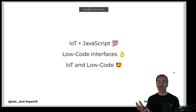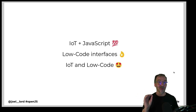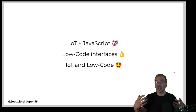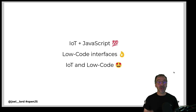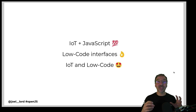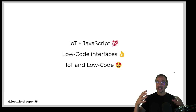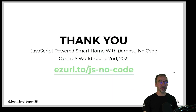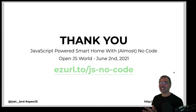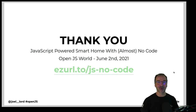You can see how I can connect all those different services — send emails, connect to Twitter — and there are a lot of different things you can do with Node-RED. IoT and JavaScript work really well together. It's nice because I don't have to learn a new language — I can use my current knowledge to immediately start programming IoT devices. Low-code interfaces are really fun and make it easier for different people to contribute. IoT and low-code go well together — especially since Node-RED is event-based and works so well with the whole IoT ecosystem. Thank you very much. This was JavaScript-Powered Smart Home with Almost No Code. You can find more at easyurl2.jsnocode, and find me on Twitter at joel__lord.